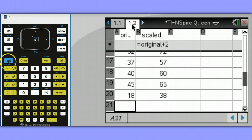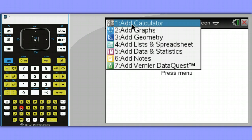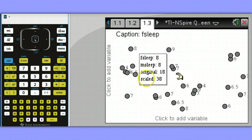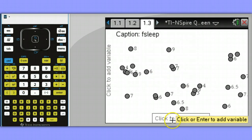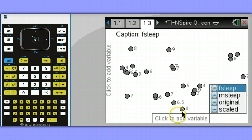I'm going to start by doing Ctrl-I to insert a page. I'm going to add data and statistics, and I'm going to choose the variable I want to create a graph of.